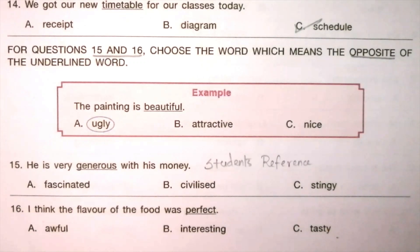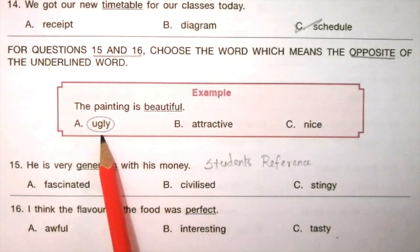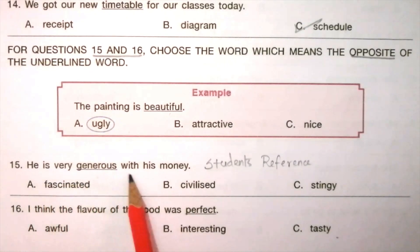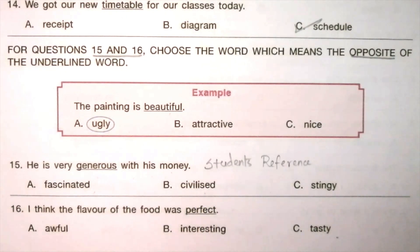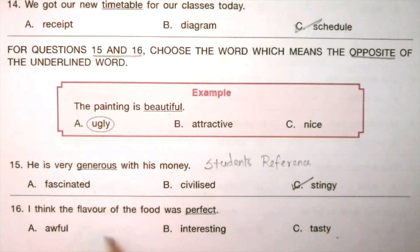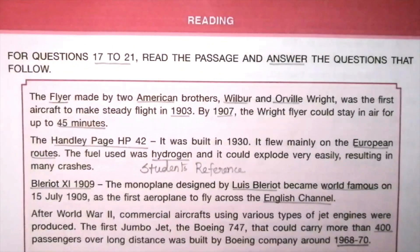For questions 15 and 16, choose the word which means the opposite of the underlined word. Example: The painting is beautiful — opposite: ugly. Question 15: He is very generous with his money. Options: fascinated, civilized, stingy. The answer is C: stingy. Generous — opposite: stingy. Question 16: I think the flavor of the food was perfect. Options: awful, interesting, tasty. The answer is A: awful. Perfect — opposite: awful. Next topic is Reading.